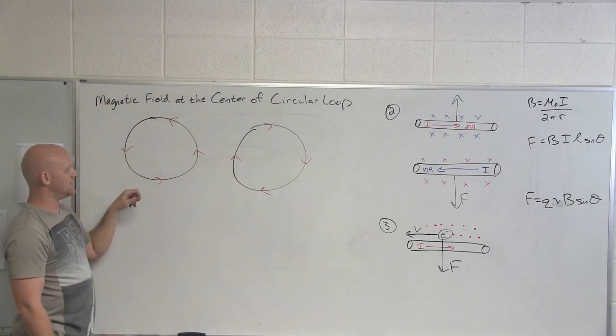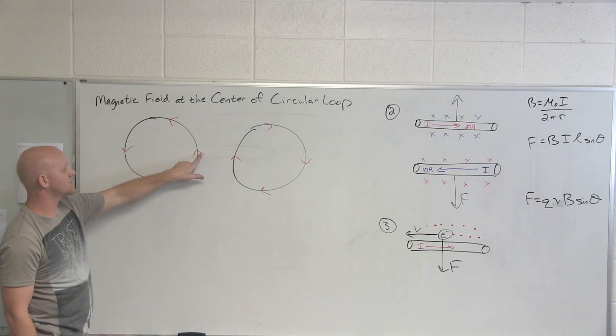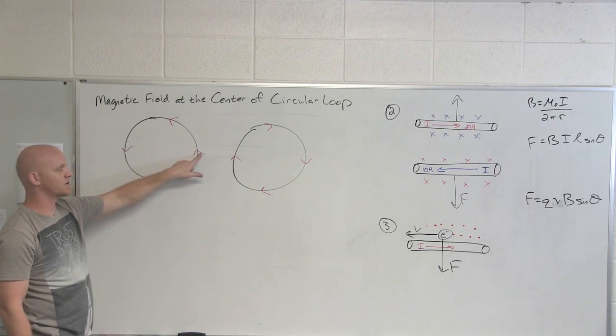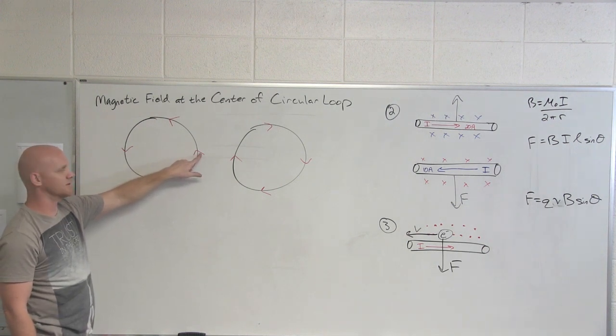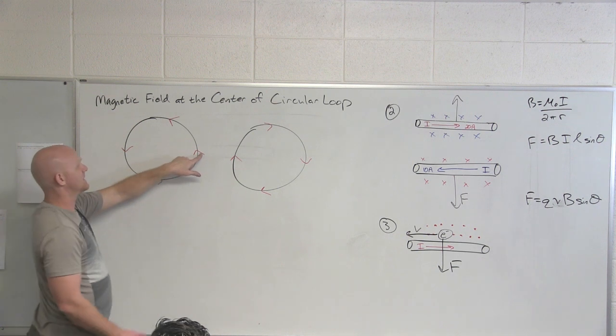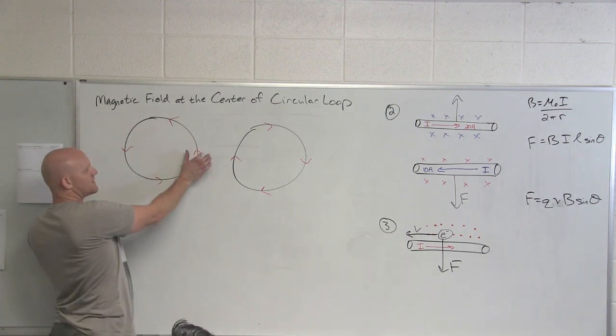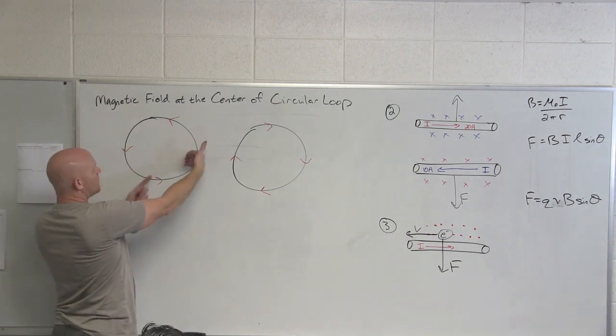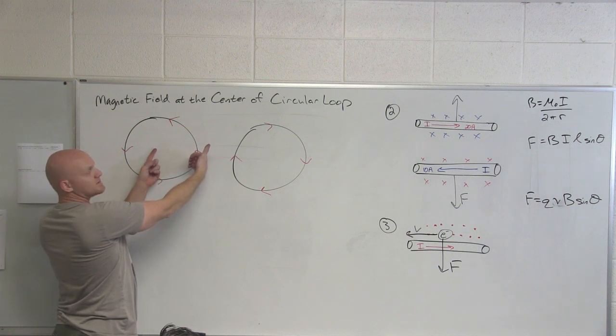If I look at just the current on this far right, which way does the current point at that exact position in the wire? Up. And so in this case if I point my thumb up, then the magnetic field it creates would point where at the center? Towards you, out of the board.